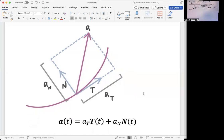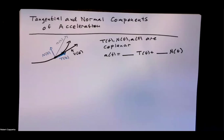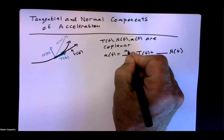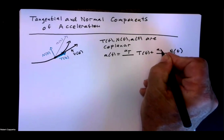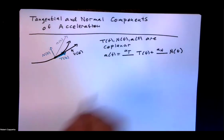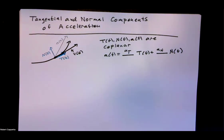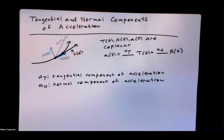So the vector a sub t times T, plus going this way a sub n times N, gives us directly the acceleration vector a of t. Now, a sub t is the tangential component of acceleration, and a sub n is the normal component of acceleration.